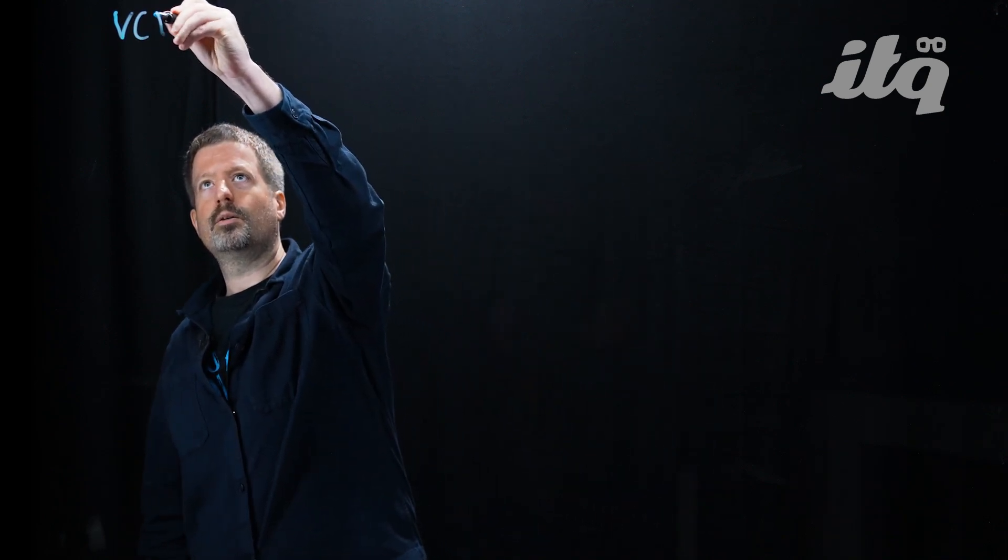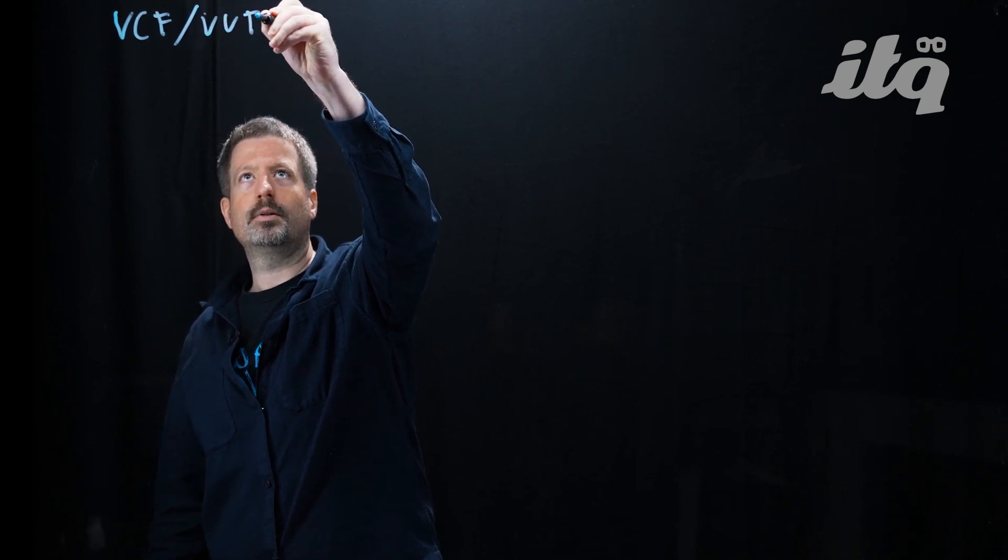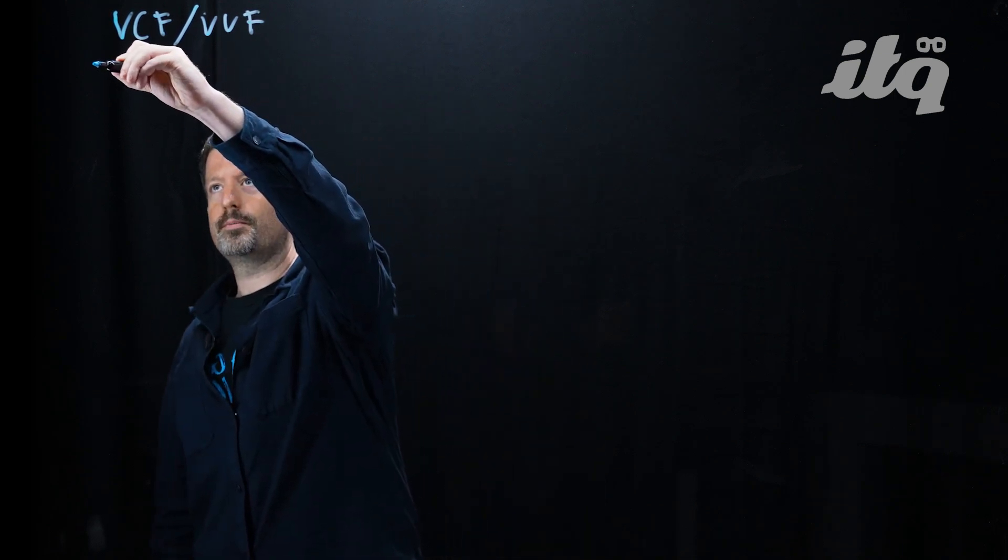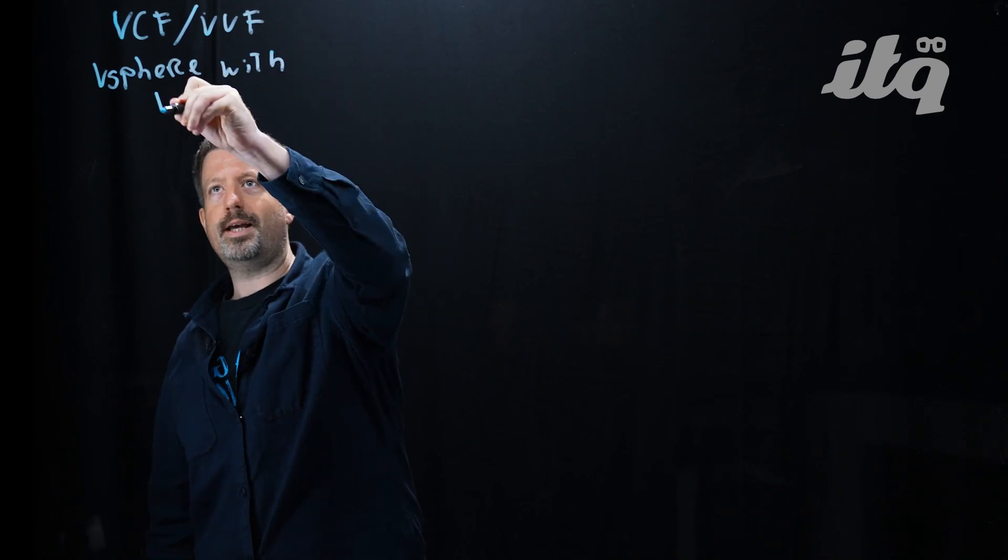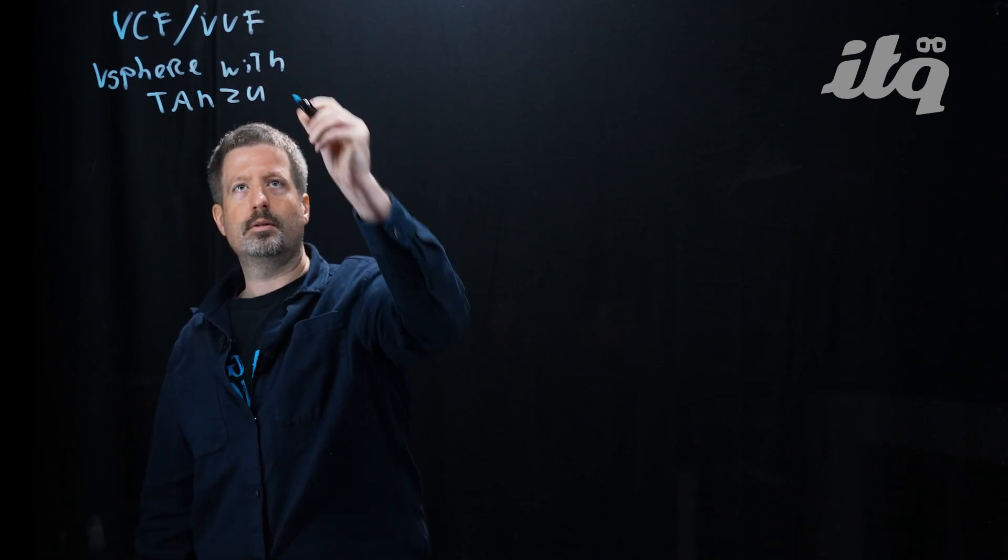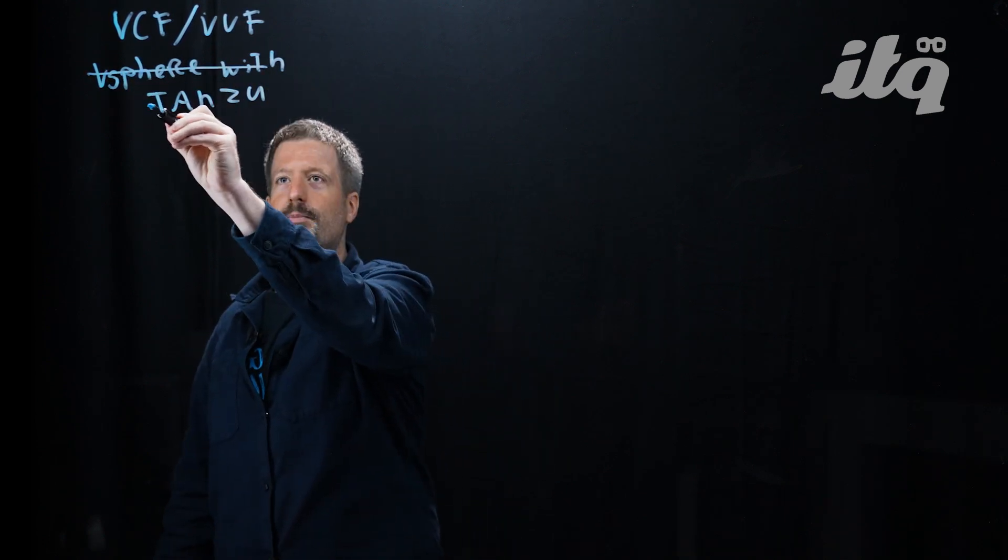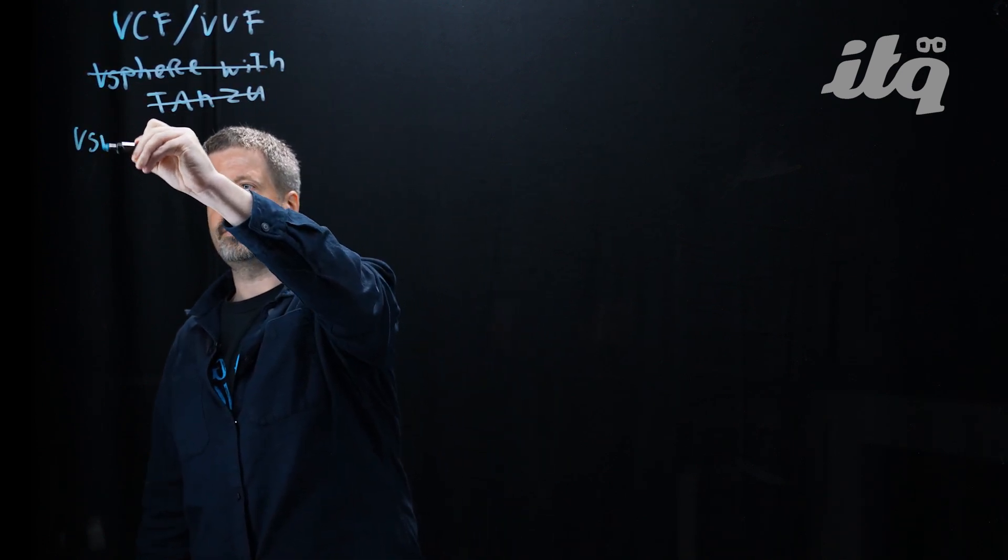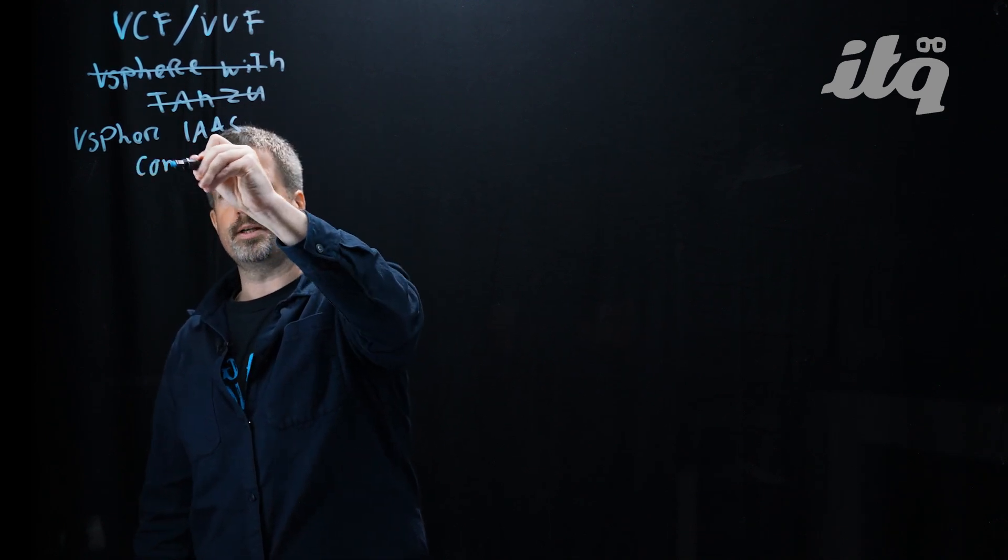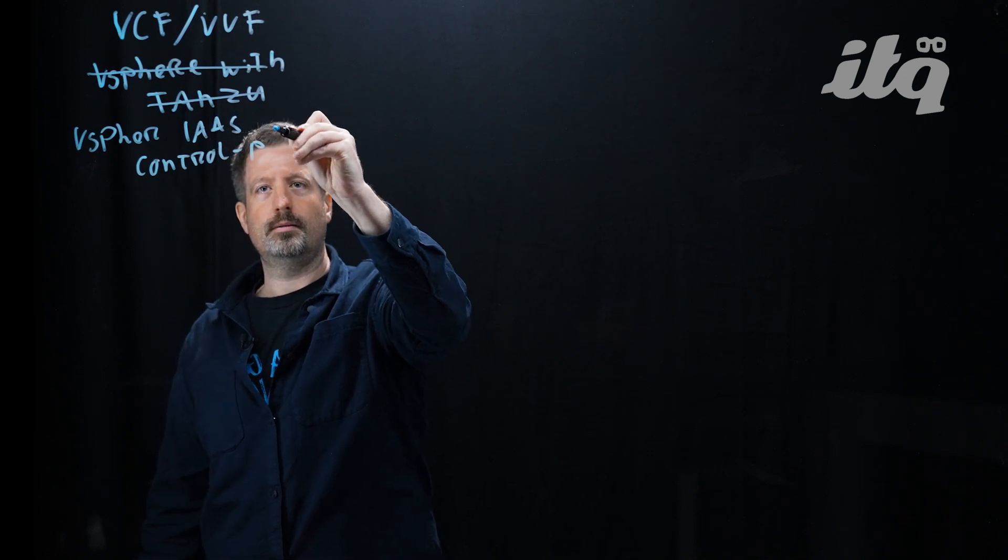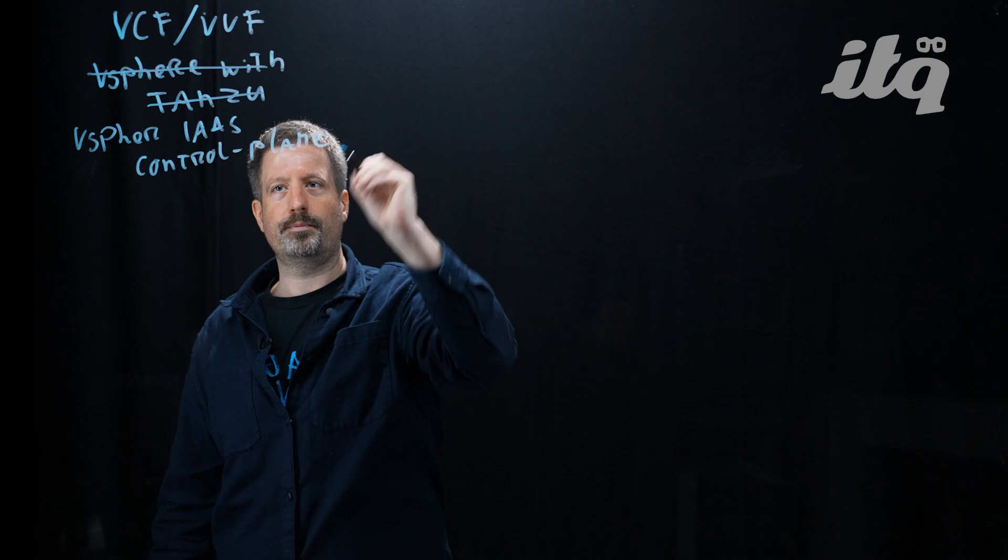When you have VCF or VVF, you have the right to run a Kubernetes distribution. This used to be called vSphere with Tanzu, but this naming is changing. It's now called the vSphere ES control plane. Interesting name, but it makes sense, and I'll explain that in a second.